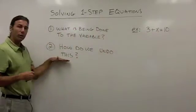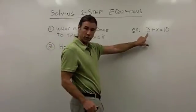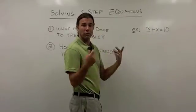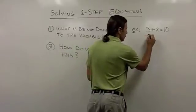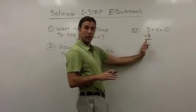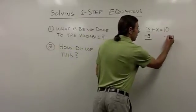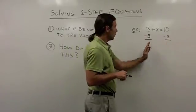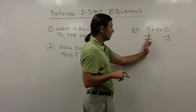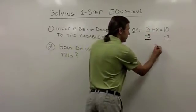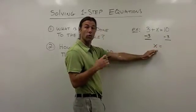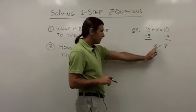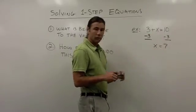Then we'll go to the next question: how do we undo this? Well, how would we undo the addition of 3? We would use the inverse operation, which is subtraction. So to undo the addition of 3, I'm going to subtract 3. I'm subtracting 3 from the left side of the equation, and I also want to subtract 3 from the right side. Whatever we do to one side of the equation, we want to do to the other side. So 3 minus 3 gives me 0, and all I'm left with on the left side is x — isolated, all by itself. On the right side, 10 minus 3 gives us 7. So the value of this variable that makes this equation a true statement is x equals 7.